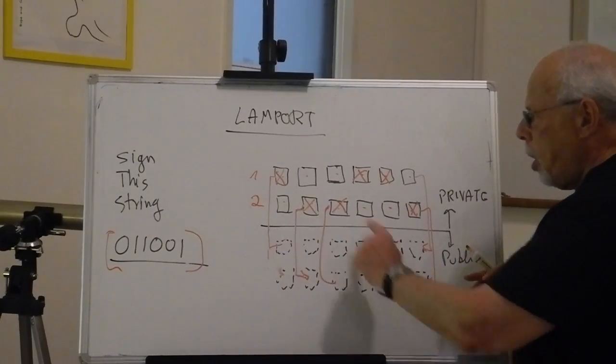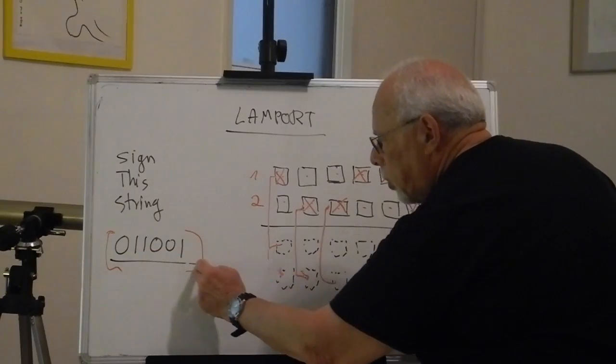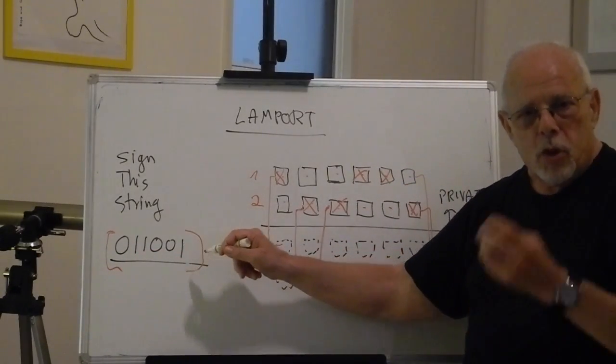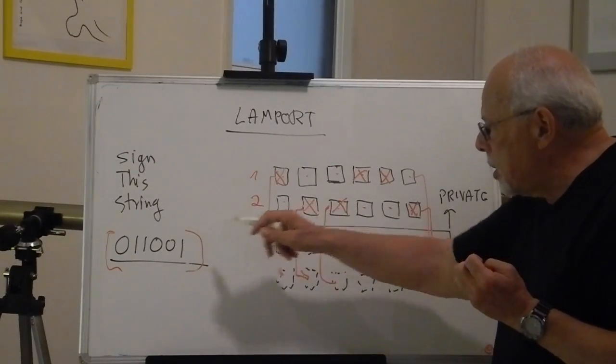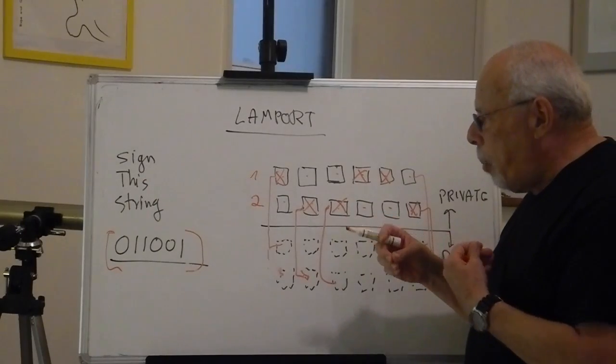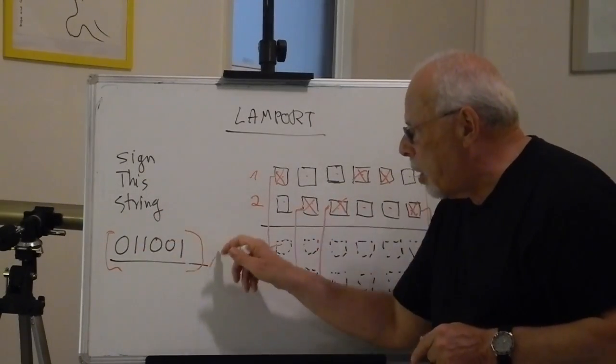So he can check that what Alice sent to him is really the preimage of the public key. But also, because of the selection here that actually follows the contents of this string which she signed, zero, one, one, zero, zero, one, Bob knows that Alice was aware of this string.